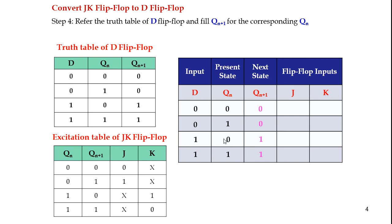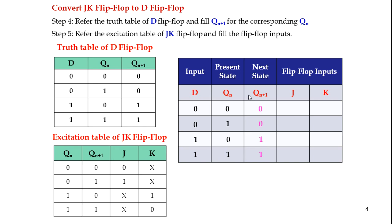We have filled the next state and now proceed to step 5: using the excitation table of the JK flip-flop to fill the flip-flop inputs. We consider present state and next state. For combination 0,0 the JK inputs are 0 and don't care (0X). For 1,0 the inputs are don't care and 1 (X1). For 0,1 it is 1 and don't care (1X). For 1,1 it is don't care and 0 (X0). This completes the excitation table for the conversion.